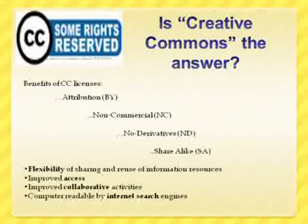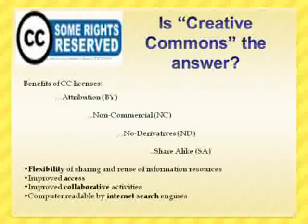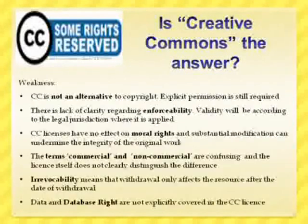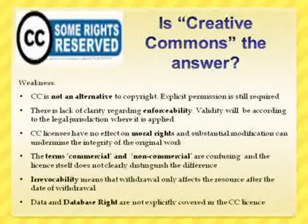Creative commons says you can use the material if you attribute it, use it in a non-commercial way, with no derivatives, or share alike. It is seen as a flexible copyright license that improves access, supports collaborative activities, and is computer-readable and therefore searchable. However, I would argue that creative commons is not the answer to the copyright problem. A CC license is not an alternative to copyright — you still need the explicit permission of third-party rights holders in order to use the material. If you do not have permission, you cannot use it, period.